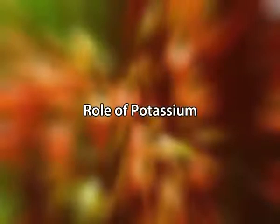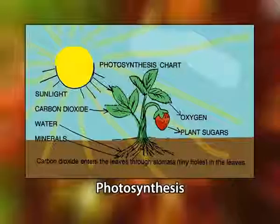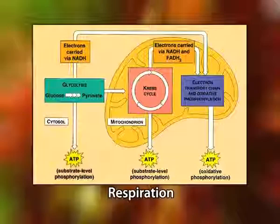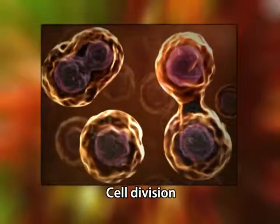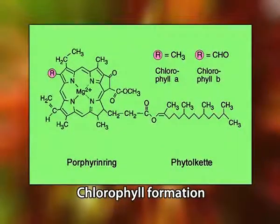Now let us discuss potassium. Potassium, available as a monovalent cation K⁺, plays an important role in regulating the osmotic potential of plant cells. It also activates many enzymes involved in photosynthesis and respiration. Potassium is also involved in cell division, stomatal movement, and chlorophyll formation.